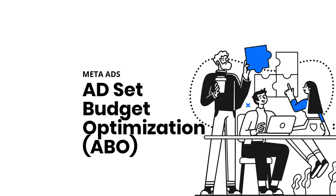There you have it — nine common ABO mistakes to avoid. Remember, even small tweaks can make a huge difference in your campaign performance. So what's one action you can take today to optimize your ABO campaigns? Until next time, happy advertising!